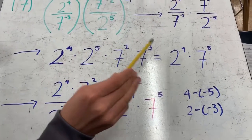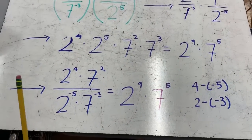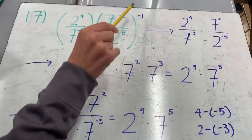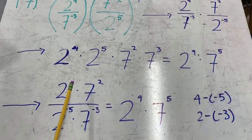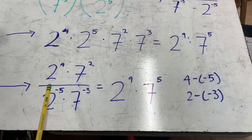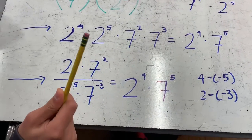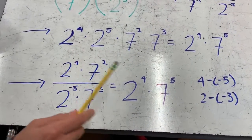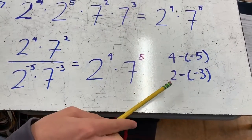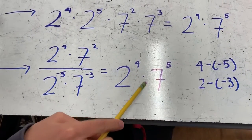Then you can add the exponents and you would get 2 to the 9th power multiplied by 7 to the 5th power. An alternative way is to also distribute the negative 1st power, and you would get 2 to the 4th power times 7 to the 2nd power over 2 to the negative 5th power times 7 to the negative 3rd power. When you divide exponents, you can subtract them, so you would get 4 minus negative 5, and 2 minus negative 3, giving you 2 to the 9th power times 7 to the 5th power.